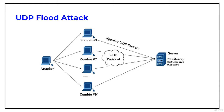Legitimate applications are inaccessible by the system, and it gives an error reply with an ICMP destination unreachable packet. This attack consumes network resources and available bandwidth, exhausting the network until it goes offline.